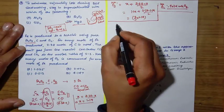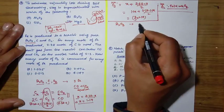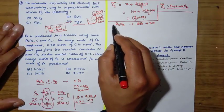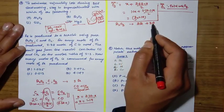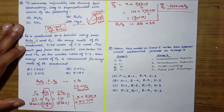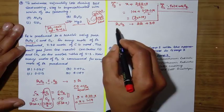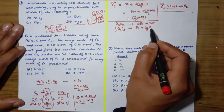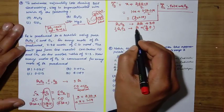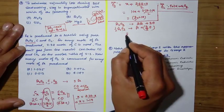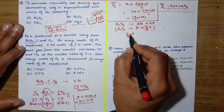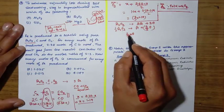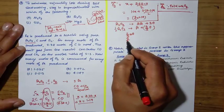If you break Fe2O3, it gives 2 moles of Fe and 3 moles of nascent oxygen. So 1 mole of Fe2O3 gives 2 moles of iron and 3 moles of oxygen. Since we're getting 1 mole of Fe, we need 0.5 mole of Fe2O3, which gives 3/2 moles of nascent oxygen. This 3/2 moles of nascent oxygen equals 3/4 moles of O2.